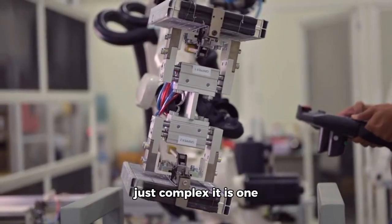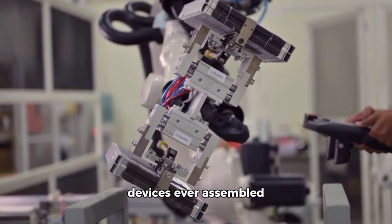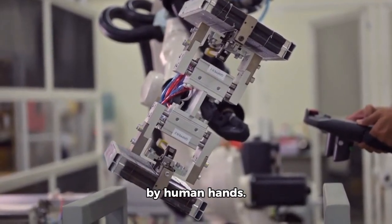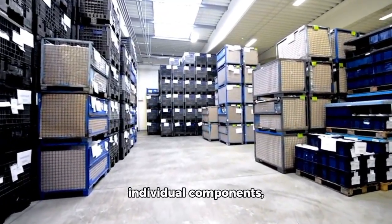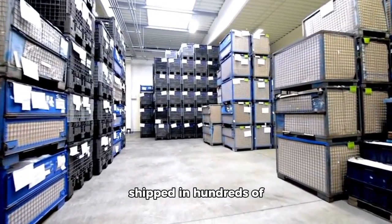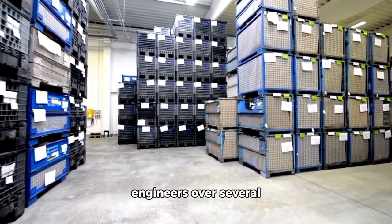But the story of EUV lithography goes even deeper. An EUV machine is not just complex, it is one of the most intricate devices ever assembled by human hands. A single system contains over 100,000 individual components shipped in hundreds of crates and assembled on site by specialized engineers over several months.